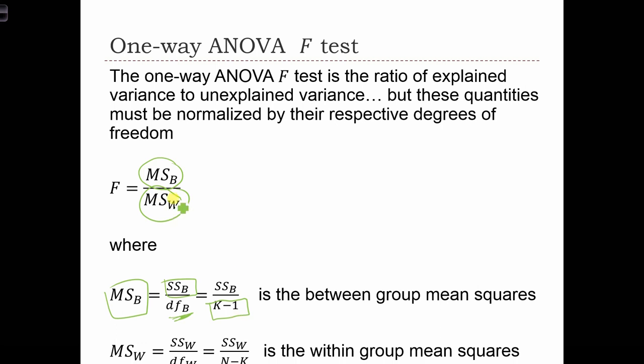And for the degrees of freedom for the denominator, in order to get the mean sum of squares within, we are going to have n minus k degrees of freedom. So n is the overall sample size, so the sum of the three sample sizes, minus k, the number of groups.